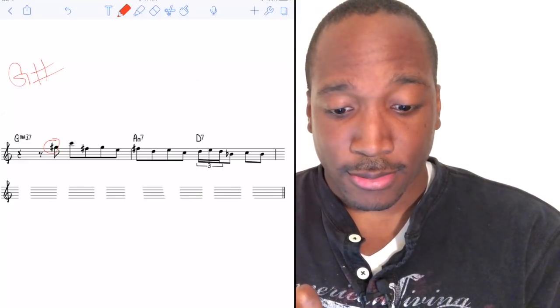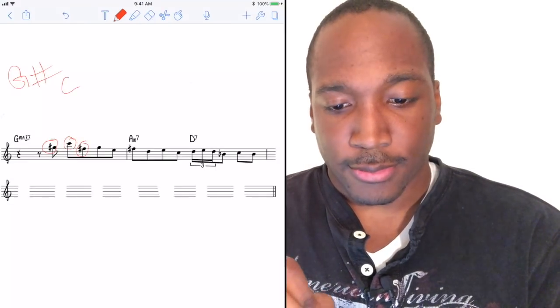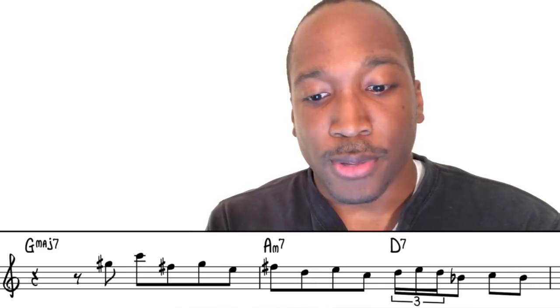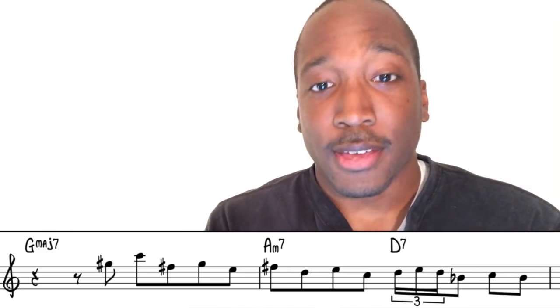So what we're going to do is simply identify each and every note in this phrase. So our first note here is a G sharp. Then we got a C, F sharp, E, a D, and we have this B flat here. If we rearrange these as a scale, this is what we'll get.